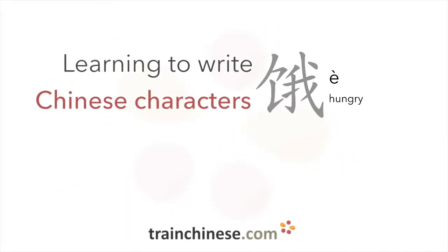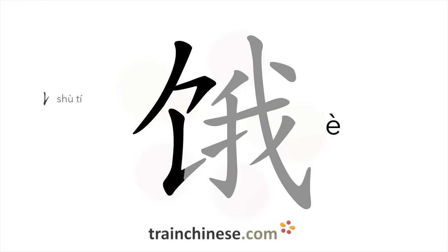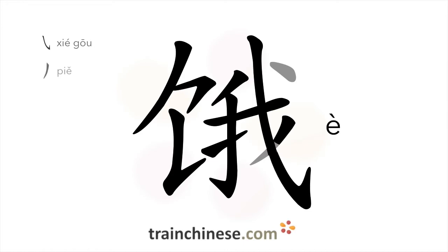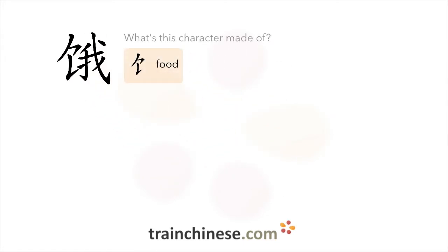Are you ready to learn another character? There are 10 strokes in this character. So what components is this character made up of? The radical in this character is food.